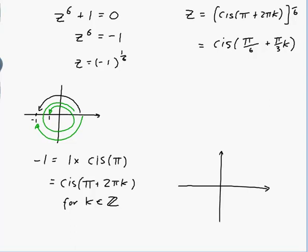So k equals 0 would be cis pi on 6, so I've got a radius of 1 and pi on 6 is 30 degrees. So that's about here. That's the first one, cis pi on 6. And then the next one would be pi on 3 from there, which would be plus 60 degrees, which would be here.